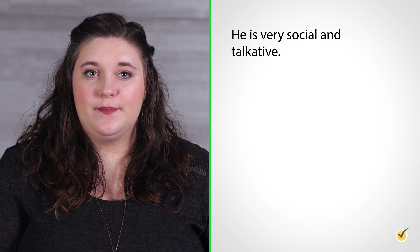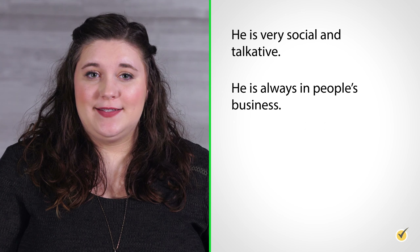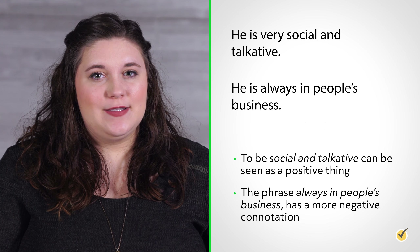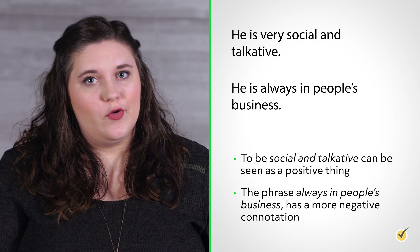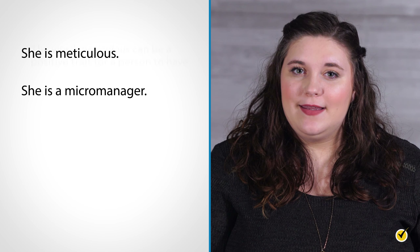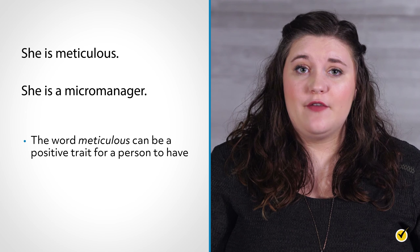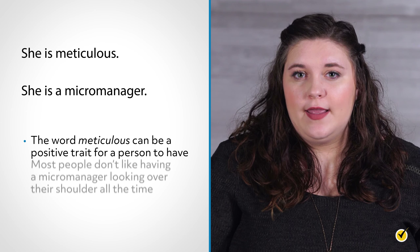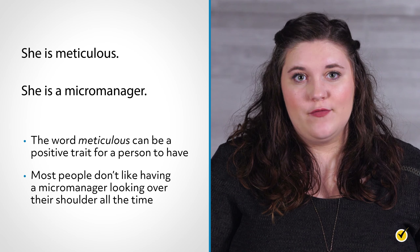Let's look at another example of how emotive language can have different connotations. 'He is very social and talkative' versus 'He is always in people's business.' The first example is positive, while the second has a negative connotation. Similarly, 'She is meticulous' versus 'She is a micromanager' — meticulous can be a positive trait, whereas most people don't like having a micromanager. That is why it's important for authors to be careful about their word choices, as they can draw either a positive or negative impression on the reader.